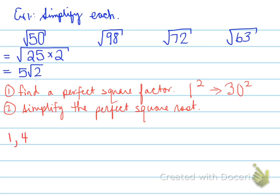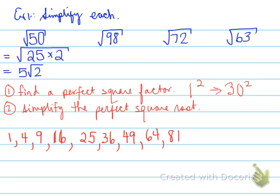All perfect squares from 1 squared to 10 squared: 1 squared is 1, 2 squared is 4, 3 squared is 9, 4 squared is 16, 5 squared is 25, 6 squared is 36, 7 squared is 49, 8 squared is 64, 9 squared is 81, 10 squared is 100.